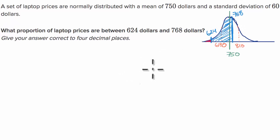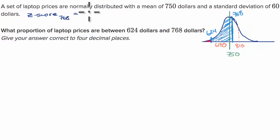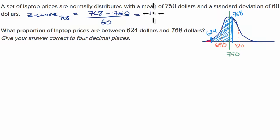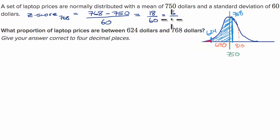Let's first figure out the z-score for $768. The z-score for 768 is going to be 768 minus 750 over the standard deviation of 60. So this is 18 over 60, which simplifies to 6/20, and that is equal to 0.30.